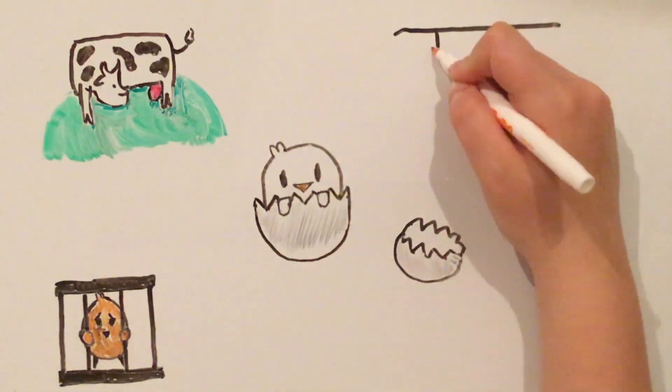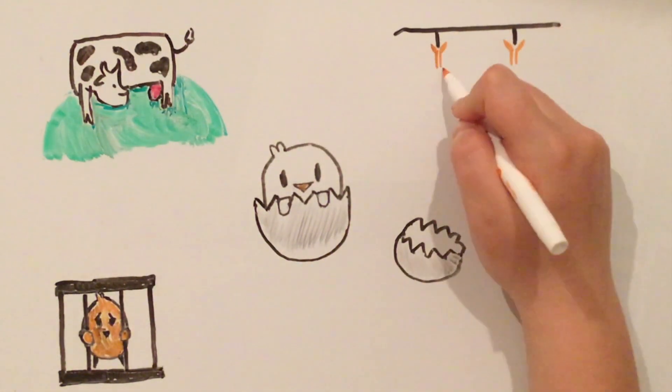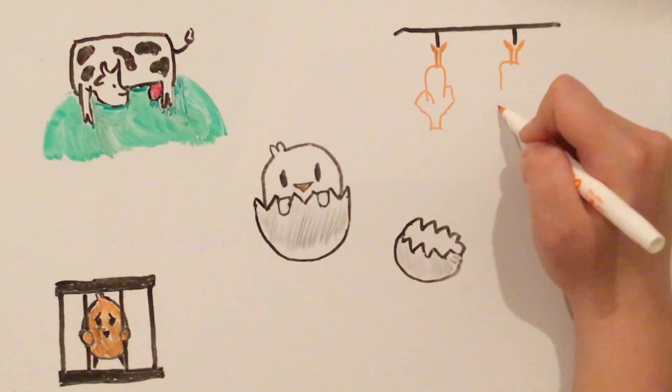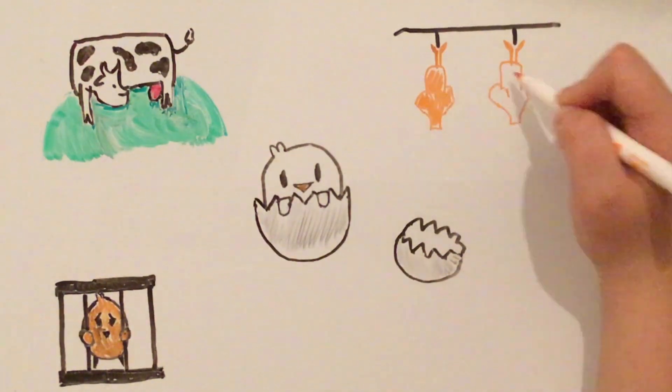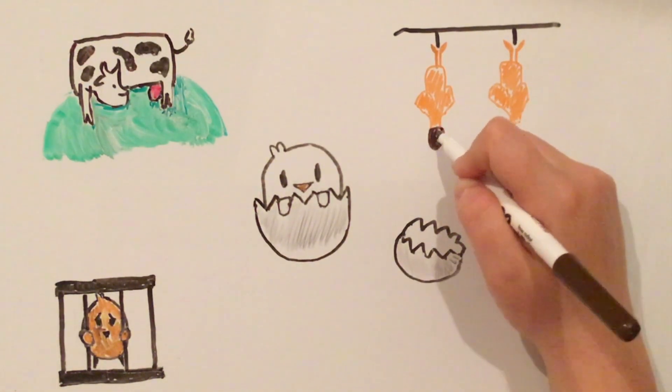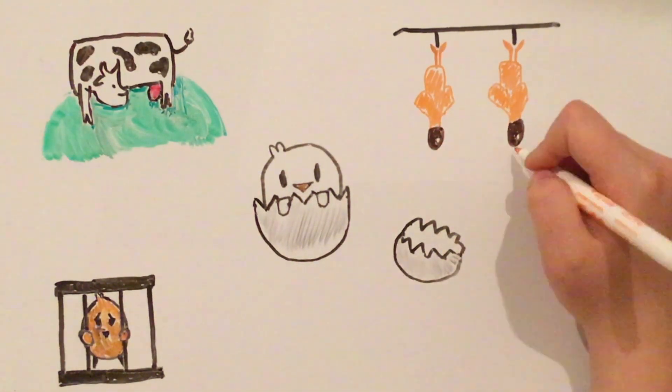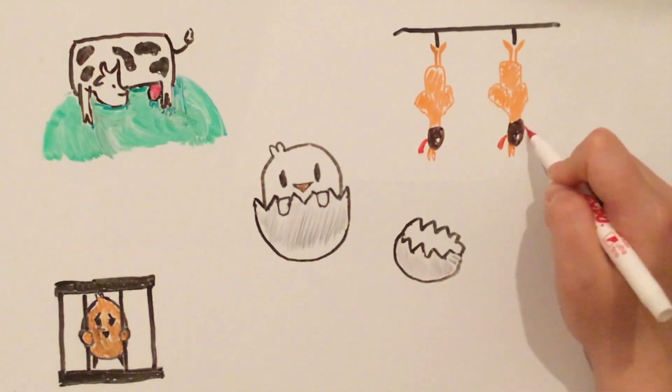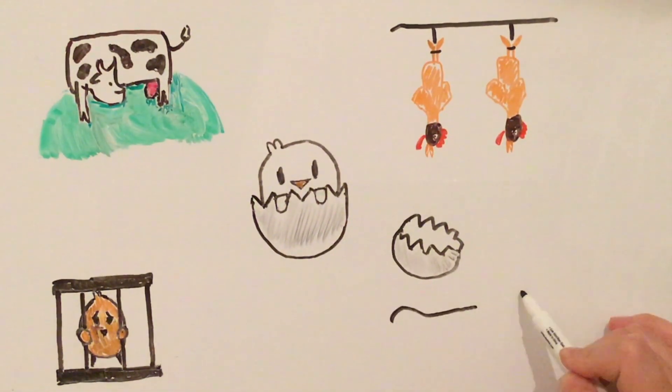When it's time for the chickens to be slaughtered, they're hung upside down and their throats are cut. Next, they are put into boiling water and their feathers are plucked. However, sometimes the chickens are not fully dead before they are put into the boiling water, so they're suffering during the process.